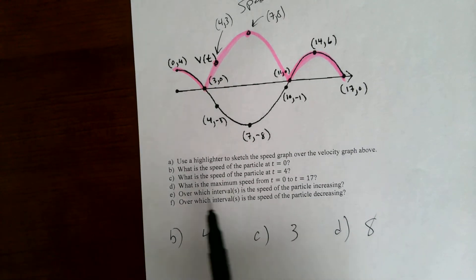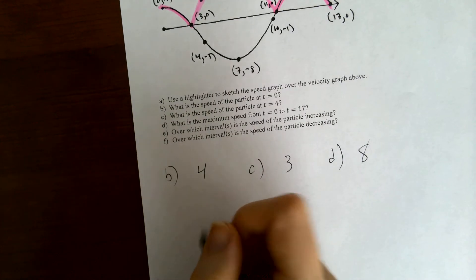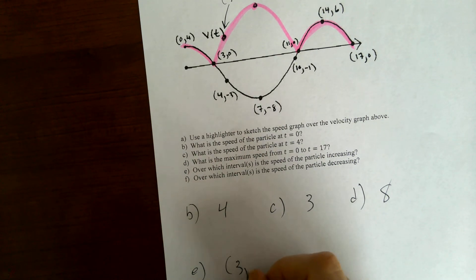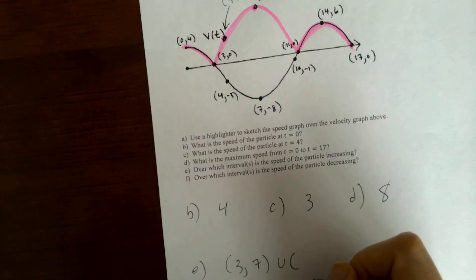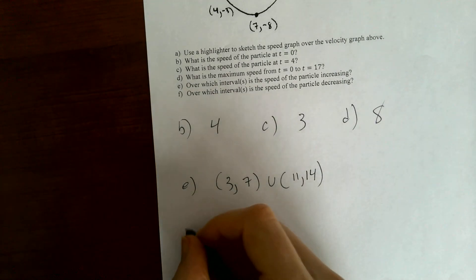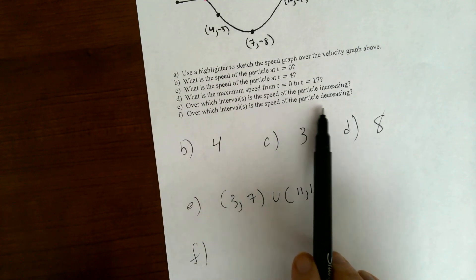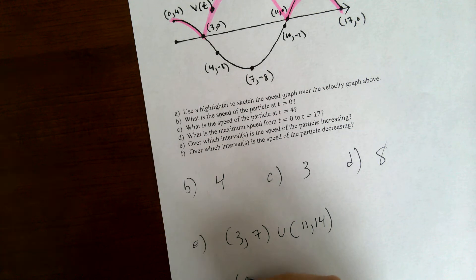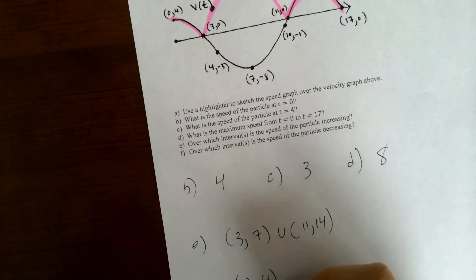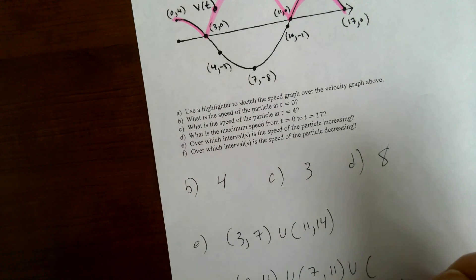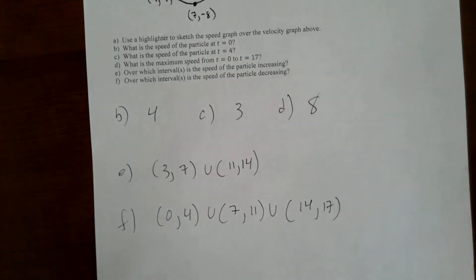Now, part e: over which intervals is the speed of the particle increasing? So you're just looking at the speed graph. It's increasing from 3 to 7, union 11 to 14. And then part f: over which intervals is the speed of the particle decreasing? It's decreasing from 0 to 4, union 7 to 11, union 14 to 17.